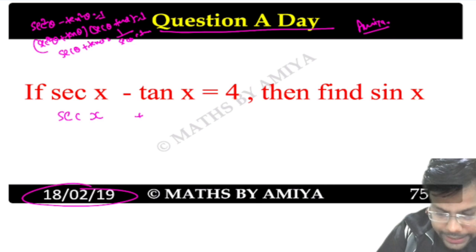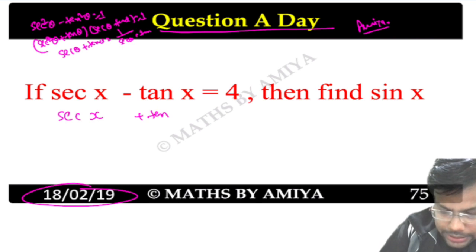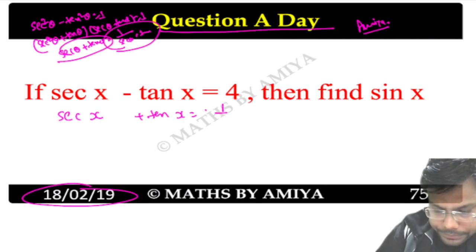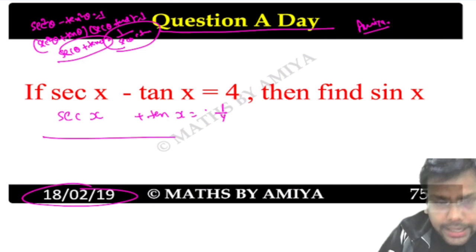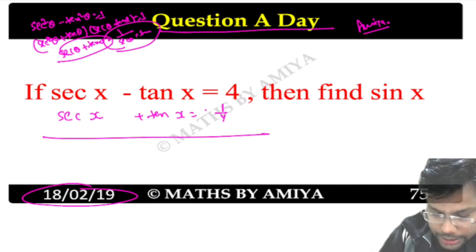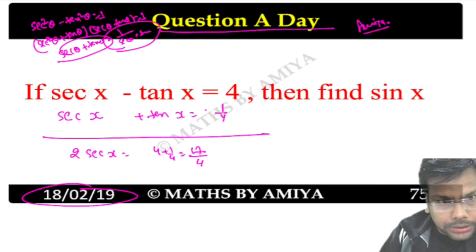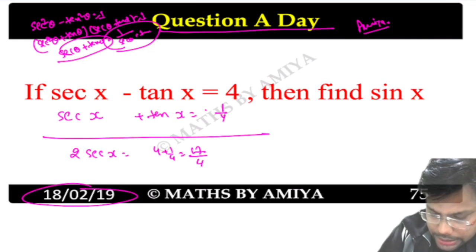We can see sec x + tan x. Given that the product is 1/4, I have seen this gives us sec x = 4 + 1/4, which is nothing but 16/4 + 1/4 = 17/4.